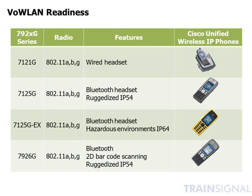The last one on this table is the 7926G, which includes a barcode scanner for tracking inventory. It's interesting to note that these phones are ABG — they are not N-enabled — but they do allow you to roam between the 2.4 and the 5 gigahertz band, so they will work on both frequencies.